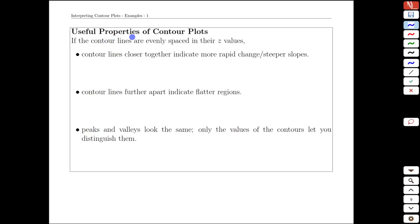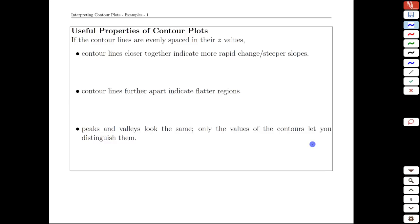In this video, we're going to identify some useful properties of contour plots or contour diagrams. Assuming that the contour lines are evenly spaced in their z values, and that's traditional, we pick evenly spaced heights like 10 meters, 20 meters, and 30 meters for topographic maps. In mathematical models, we'll pick nice values like z equals 1, 2, and 3.